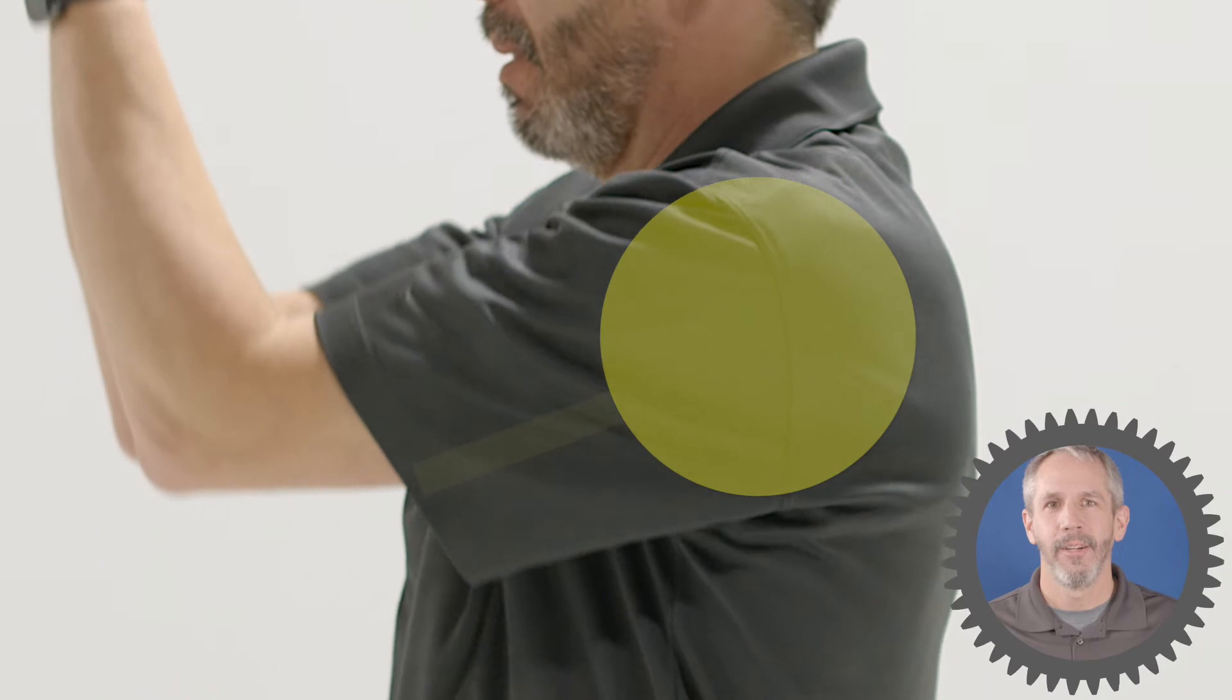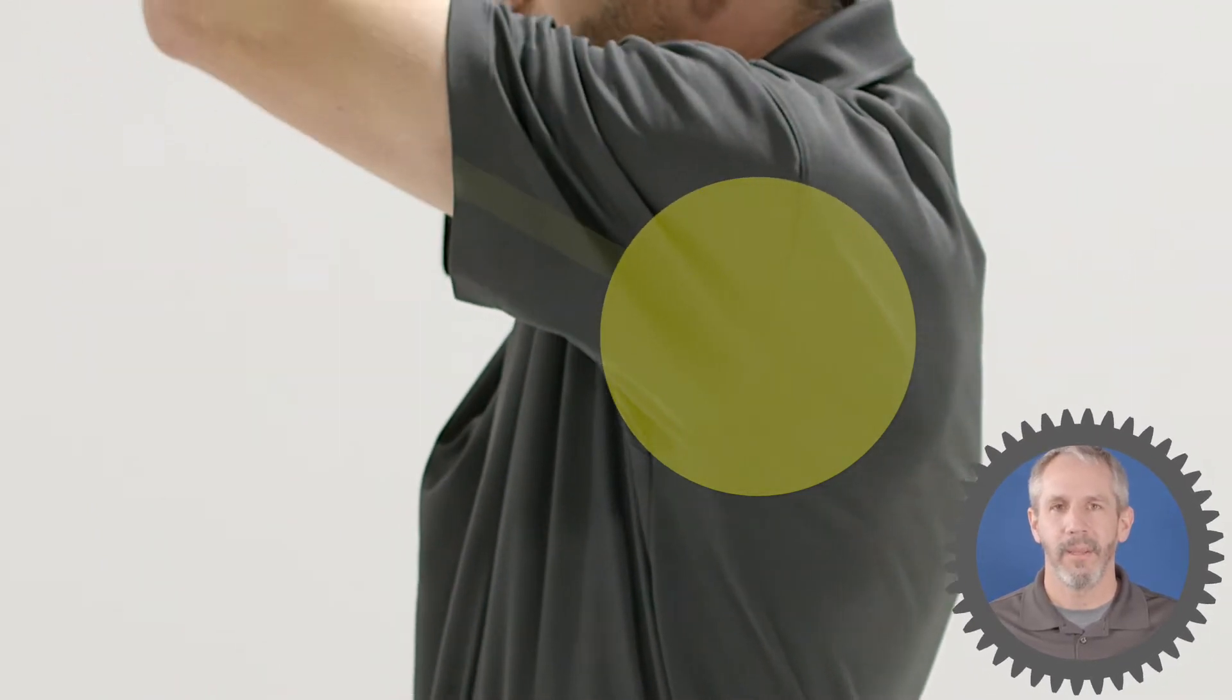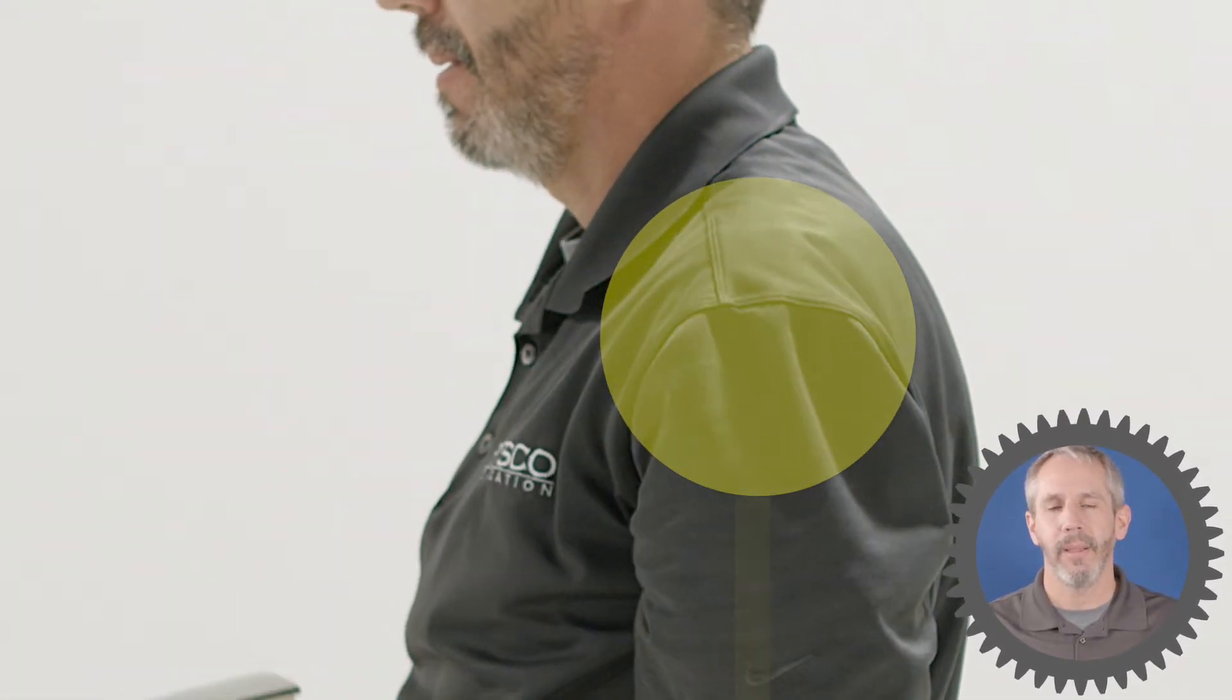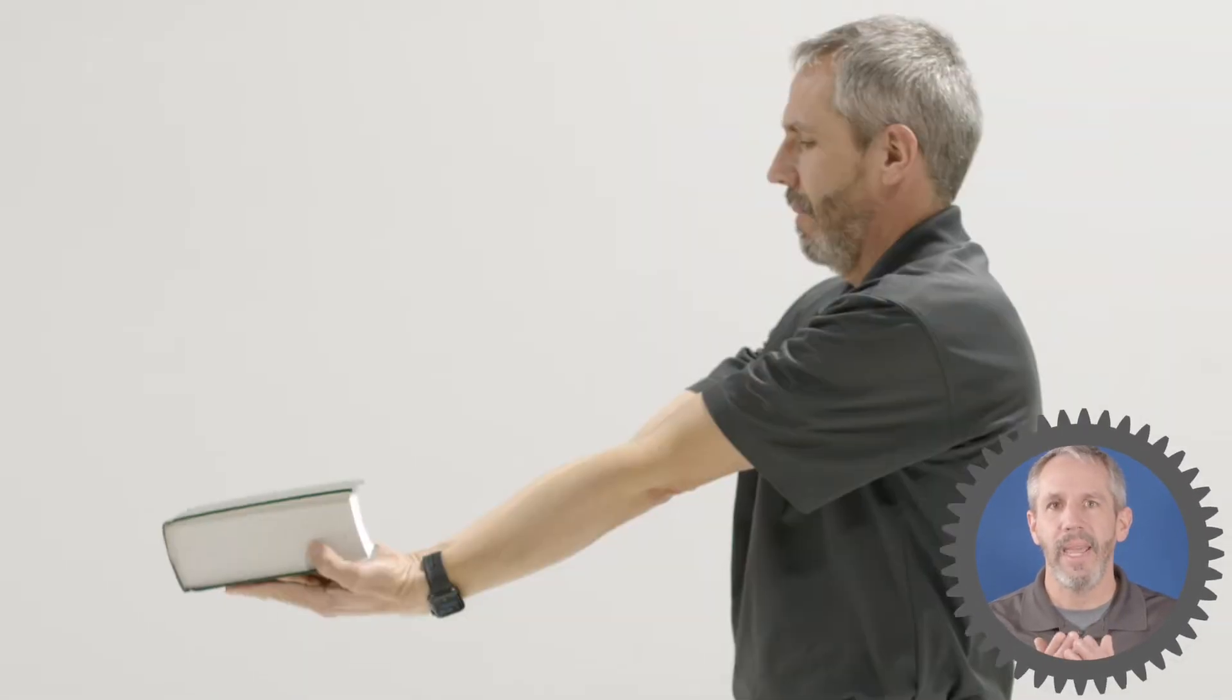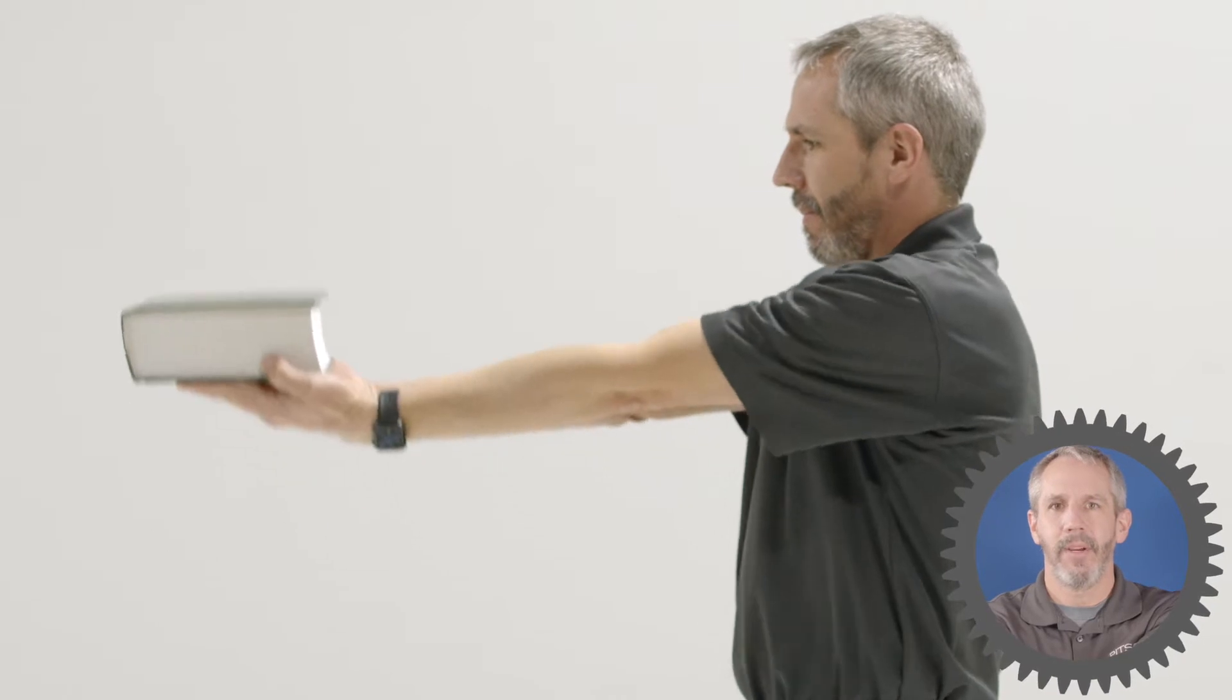Think of it this way. Your shoulders are like the servo that does the lifting, and your arms are like the lever arm. When your arms are in close to your body, your shoulders can lift a lot more weight than when they are outstretched away from your body.